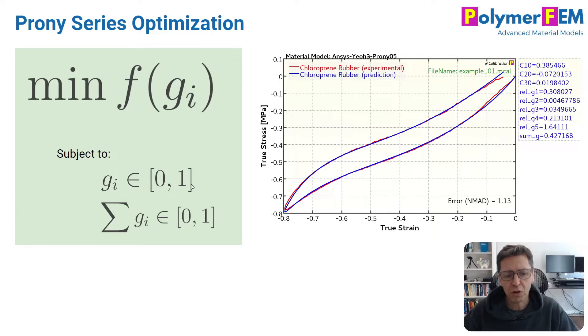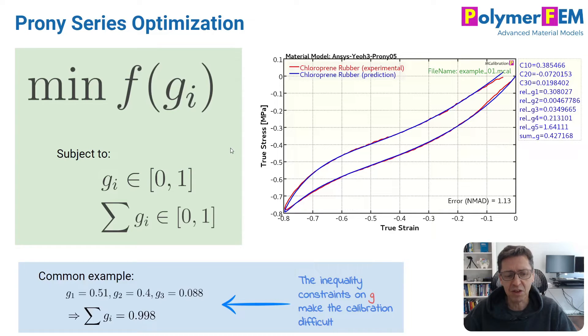But the relaxation terms are not independent and free. So first of course they need to be between 0 and 1. Each of these g values need to be between 0 and 1. But also the sum of the g values have to be between 0 and 1. The sum cannot be larger than 1 in the finite element program. And that causes a problem when you do a calibration. This additional summation constraint complicates things.